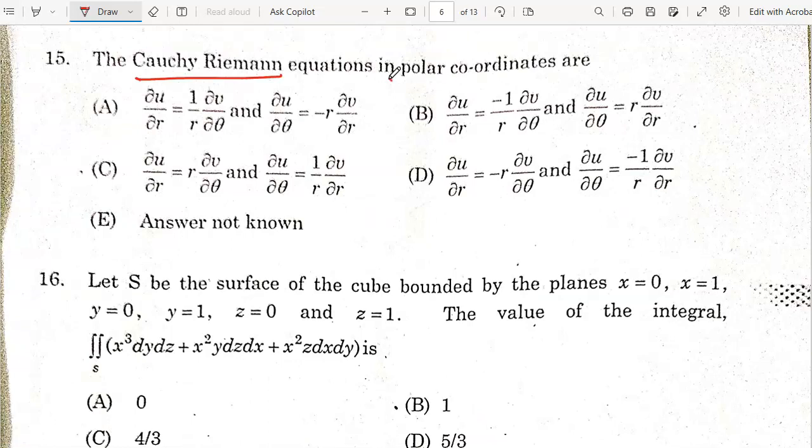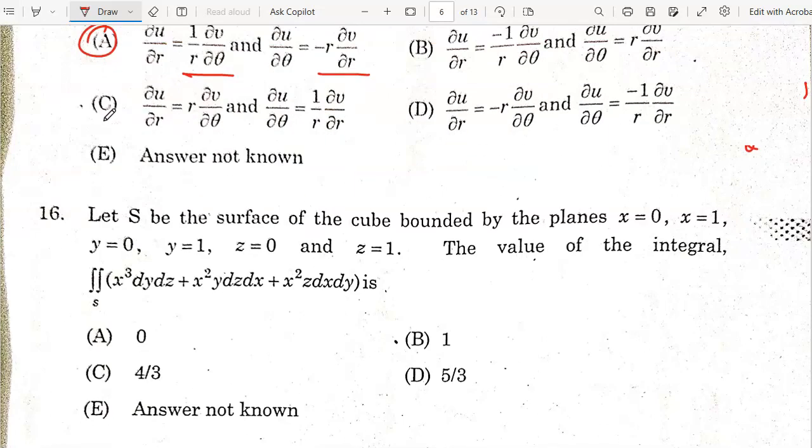The Cauchy-Riemann equation in polar coordinates: Option A, du/dr equals 1/r times du/d-theta, and du/d-theta equals minus r times du/dr is the correct answer.